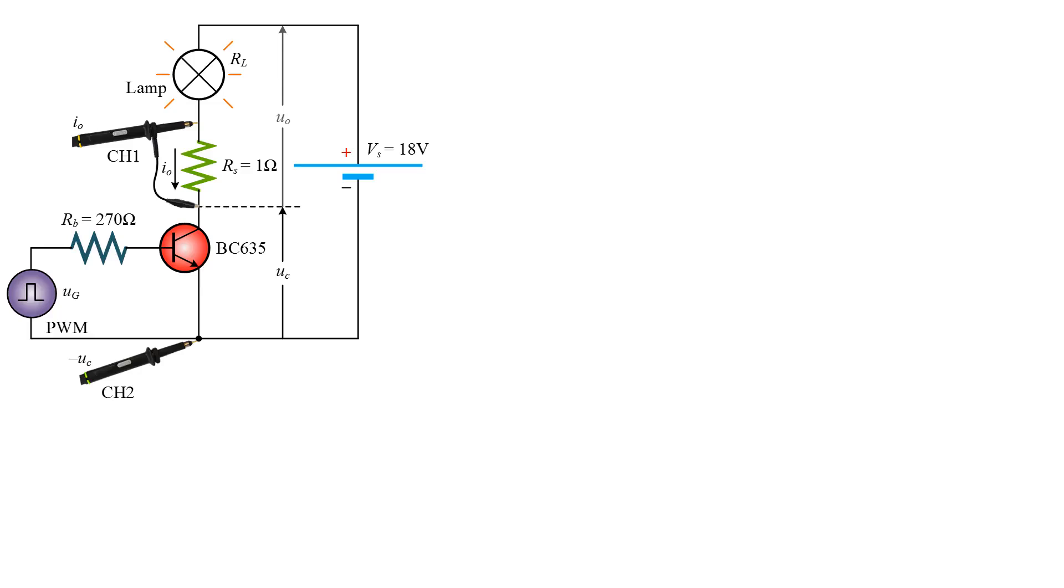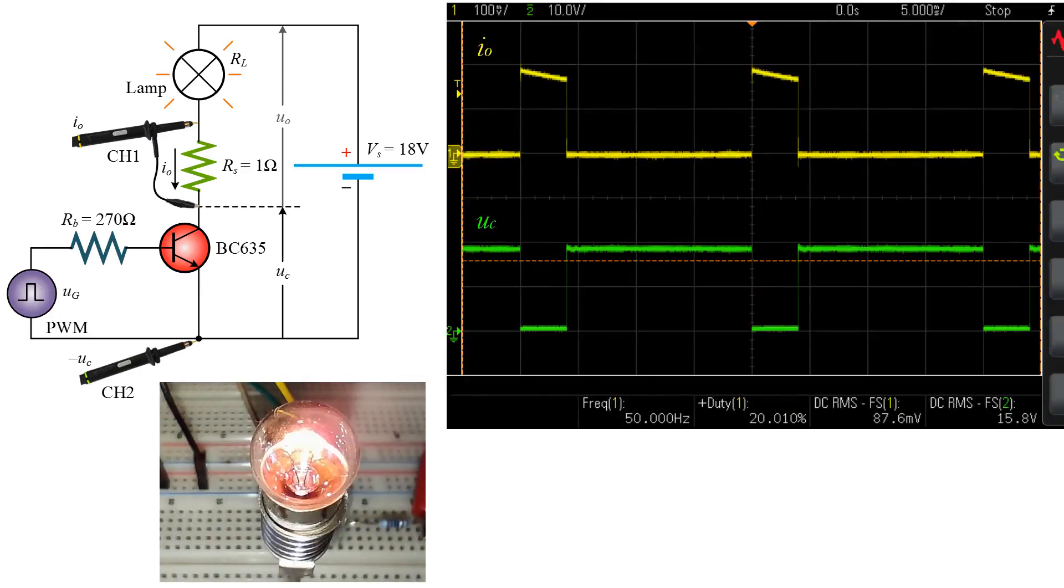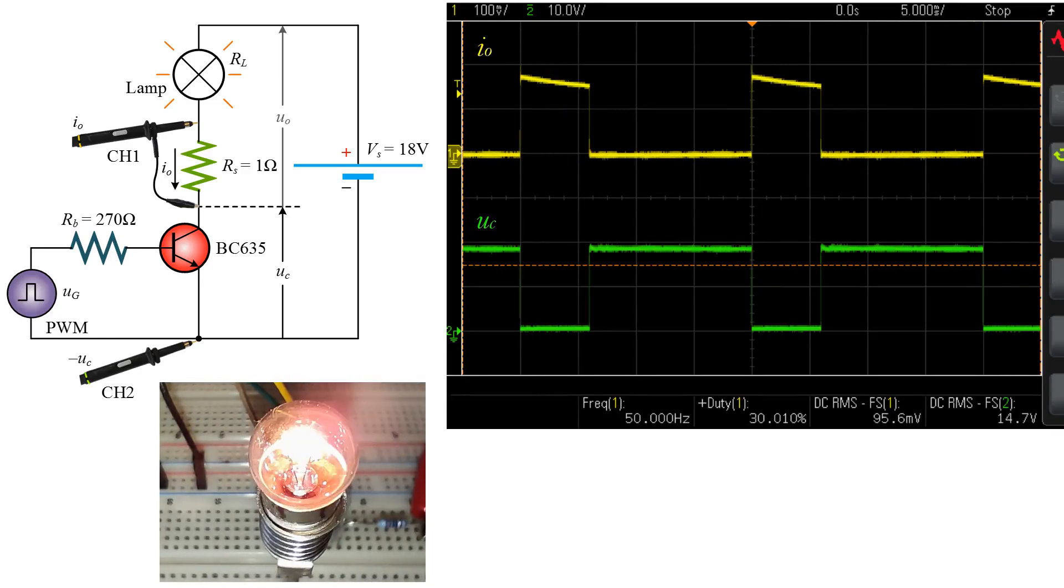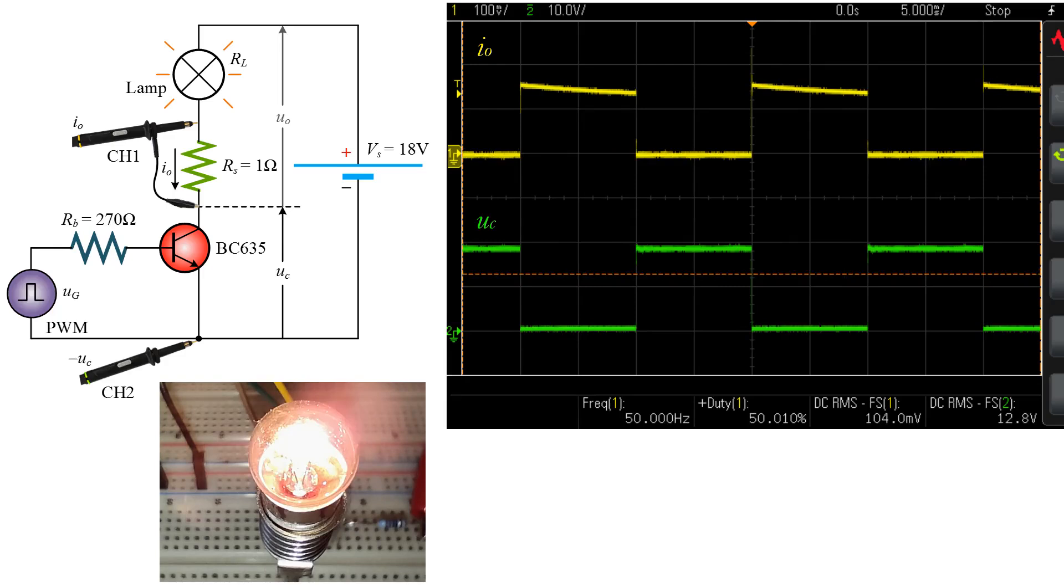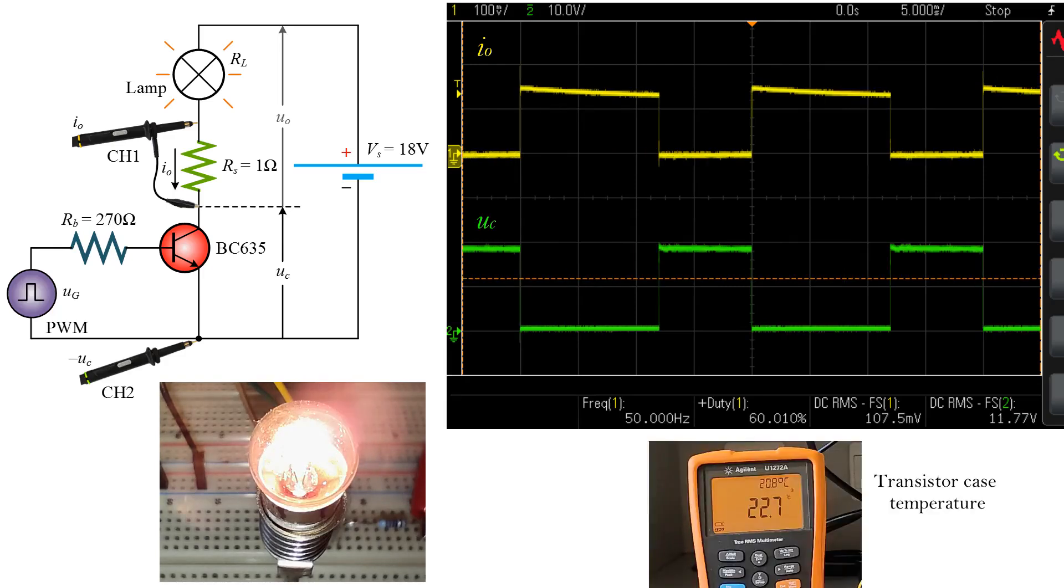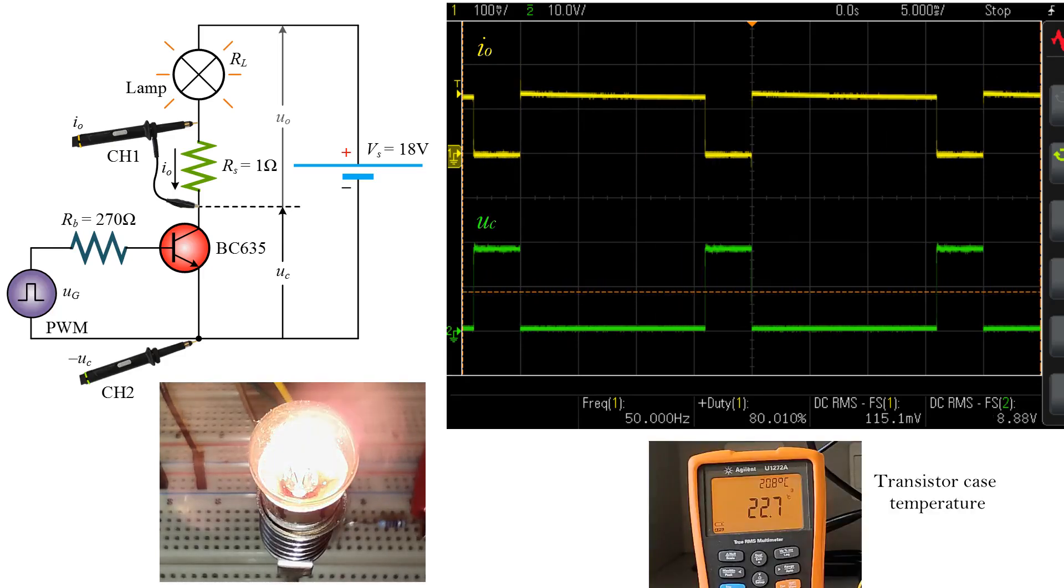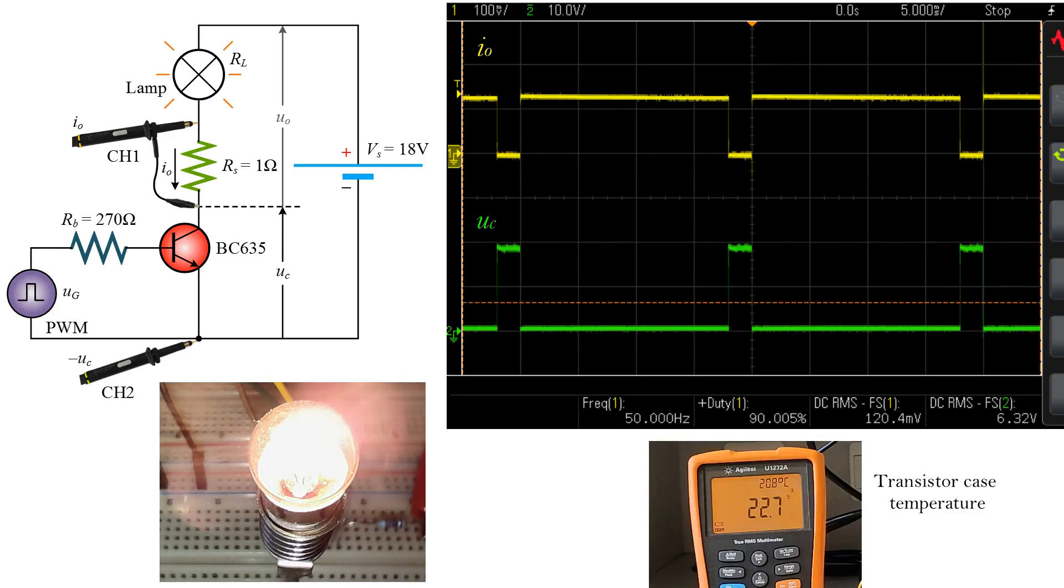Regardless of the frequency, the duty cycle of the PWM signal determines the RMS value of the load voltage and current, thus the brightness of the lamp. The temperature of the transistor is only 23 degrees Celsius, as the power losses are extremely small.